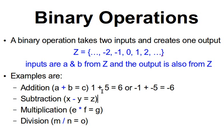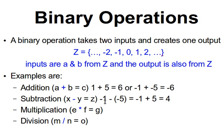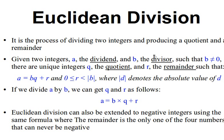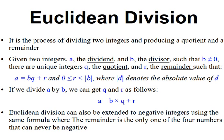For subtraction, for example, minus 1 minus minus 5: since minus times minus is positive, this becomes minus 1 plus 5, which is 4. The same concept applies for multiplication and division. Division has a certain importance in our context when we're speaking about integer numbers — we'll come to that in a moment.